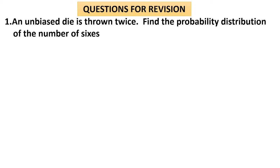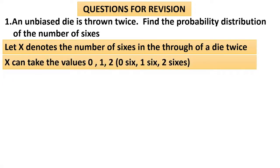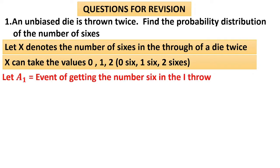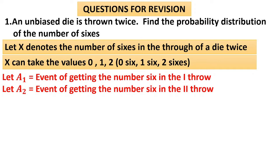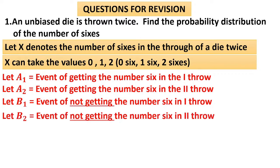Question 1: An unbiased die is thrown twice. Find the probability distribution of the number of sixes appearing. Let X denote the number of sixes in two throws of a die. X can take values 0, 1, and 2 — meaning both non-six, one six and one non-six, and both sixes respectively. Let A1 be the event of getting 6 in the first throw, A2 in the second throw, B1 not getting 6 in the first throw, and B2 not getting 6 in the second throw.